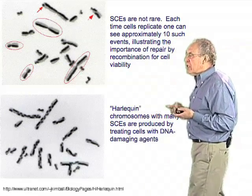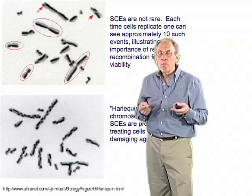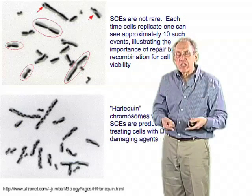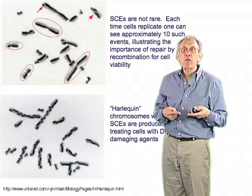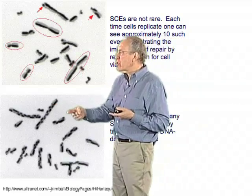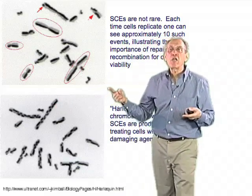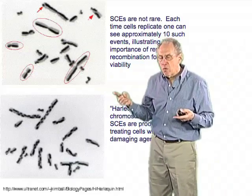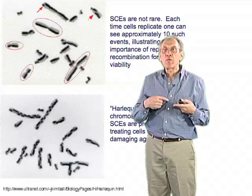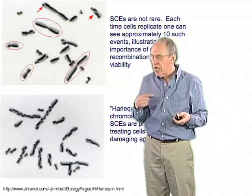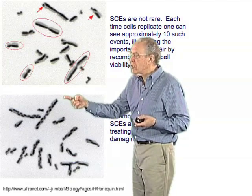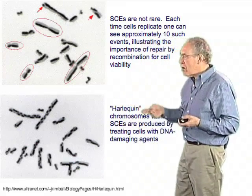We can make these chromosomes remarkably exchanged by adding DNA-damaging agents. If we increase the likelihood that these chromatids need DNA repair mechanisms to finish the process of replication, we end up with what are called harlequin chromosomes. Harlequin was a comic character in Renaissance Commedia dell'arte plays in Italy, and he wore a costume with black and white checks — so these are called harlequin chromosomes. Every alternating segment represents another sister chromatid exchange.